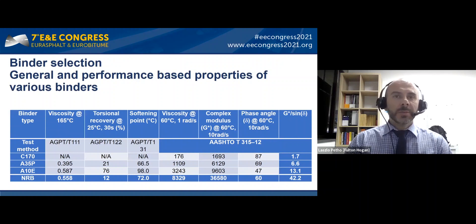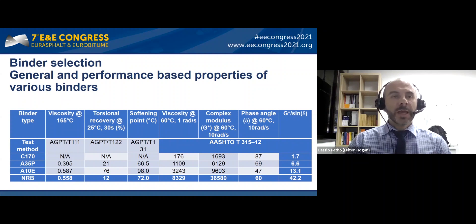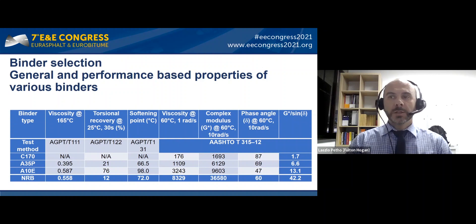We also provide a comparison table in the paper: a plain binder C170 (equivalent to PEN 70/100 in Europe), an A35P plastomeric modified binder, an A10E elastomeric binder popular in Australia, and finally the newly developed racing binder. At the end of the table you can see the G*/sin(delta) values — the newly developed binder has a very high value for this property, indicating very high resistance against rutting.